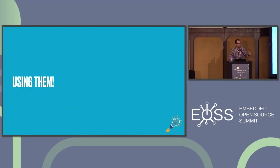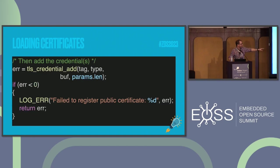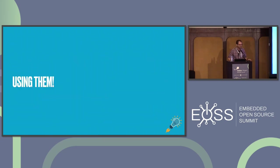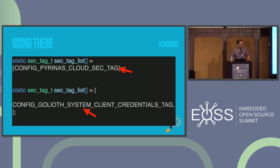Once you've written the certs using TLS credential add, this can be done at any point in time in your application. So maybe if you don't have control over your client, you can do this before the initialization of that client — maybe you're using AWS or something like that and want to add it before the fact, if your device does not have a secure key store. It's just an option.